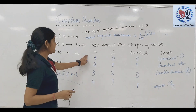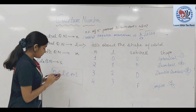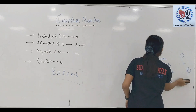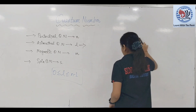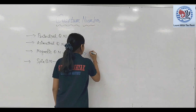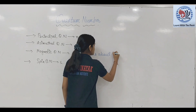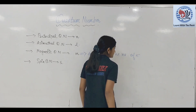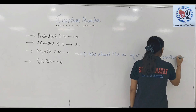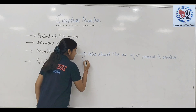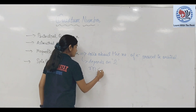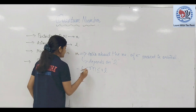So L basically tells about the shape of orbital. Now, magnetic quantum number tells about the number of electrons present in an orbital. M depends on L. M की जो range होती है वो negative L से positive L तक होती है।